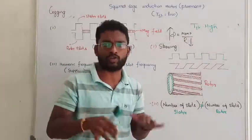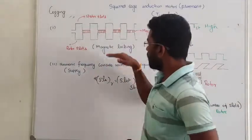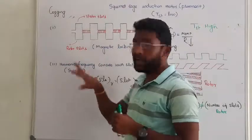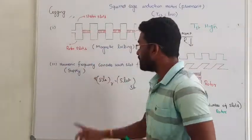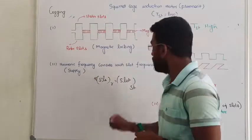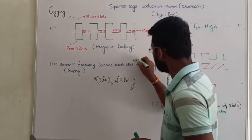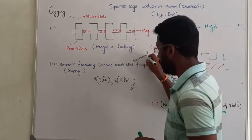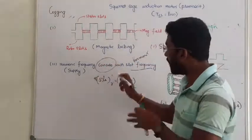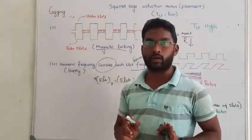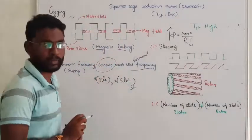Cogging can also be called magnetic locking. Another cause of magnetic locking occurs when the supply has a harmonic frequency — specifically the slot harmonic frequency. If the supply contains slot harmonic frequency, you will again have the same problem of magnetic locking. This case is rare, but it is one of the causes of magnetic locking.